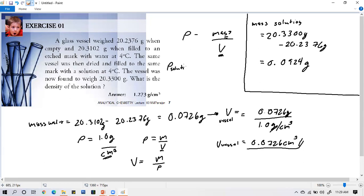Therefore, the density of the solution - just substitute - is 0.0924 grams over 0.0726 cubic centimeters. Let's see if our answer matches. The answer is 1.273 grams per cubic centimeter. It matches! 1.273 grams per cubic centimeter. This is now the density of our solution.